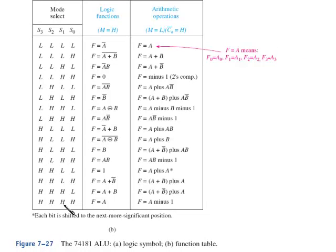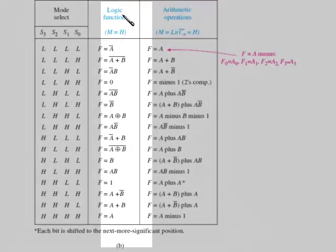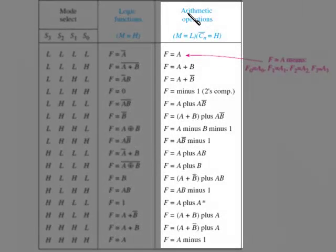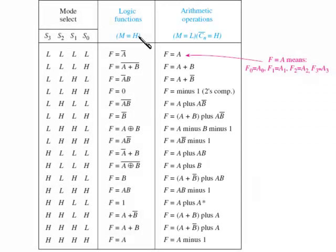Figure 27B is the function table and basically there's two columns we want to look at: the column for the logic operations when you make M equals a high, and the column when you have arithmetic operations which is when you make M equals a low. Basically logic functions are going to be invert, NOR, NAND, exclusives, non-exclusives, all sorts of logic operations. And in the arithmetic column we're going to be doing additions, subtractions, and so on in the arithmetic.